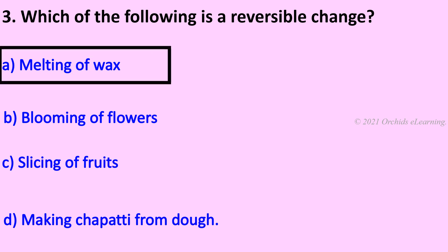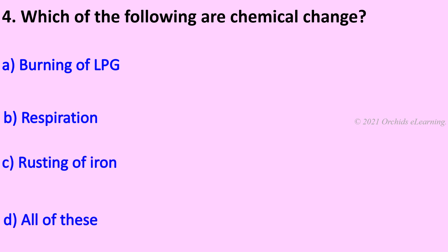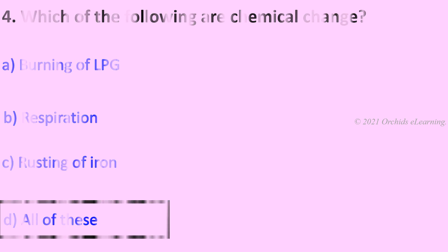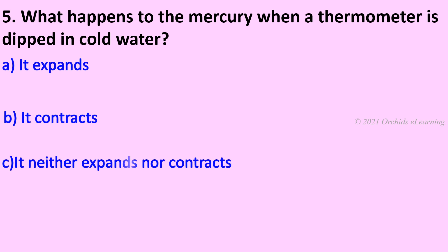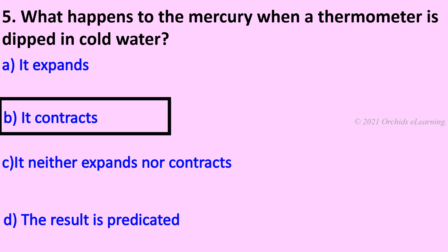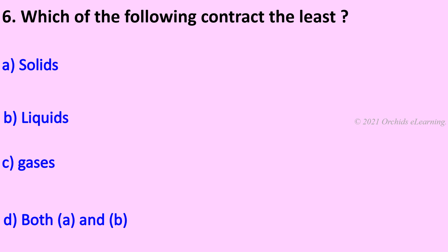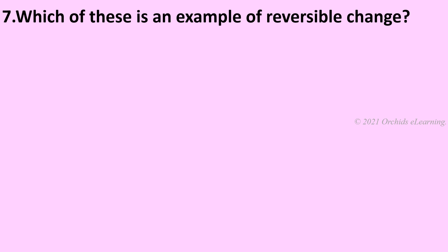Which of the following is a reversible change? Melting of wax. Which of the following are chemical changes? All of these. What happens to the mercury when a thermometer is dipped in cold water? It contracts. Which of the following contracts the least? Gases.